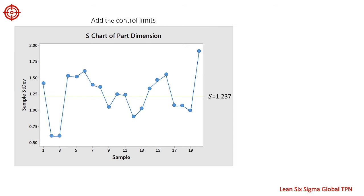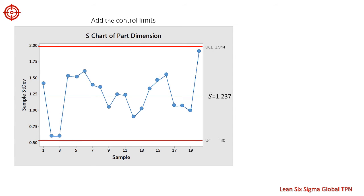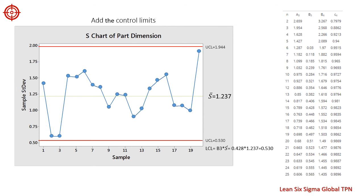Now we add control limits. For the part dimension data, the upper control limit is 1.944 and the lower control limit is 0.53. These limits show the amount of variation expected for the subgroup standard deviation. Here is the formula to calculate the upper and lower control limits.